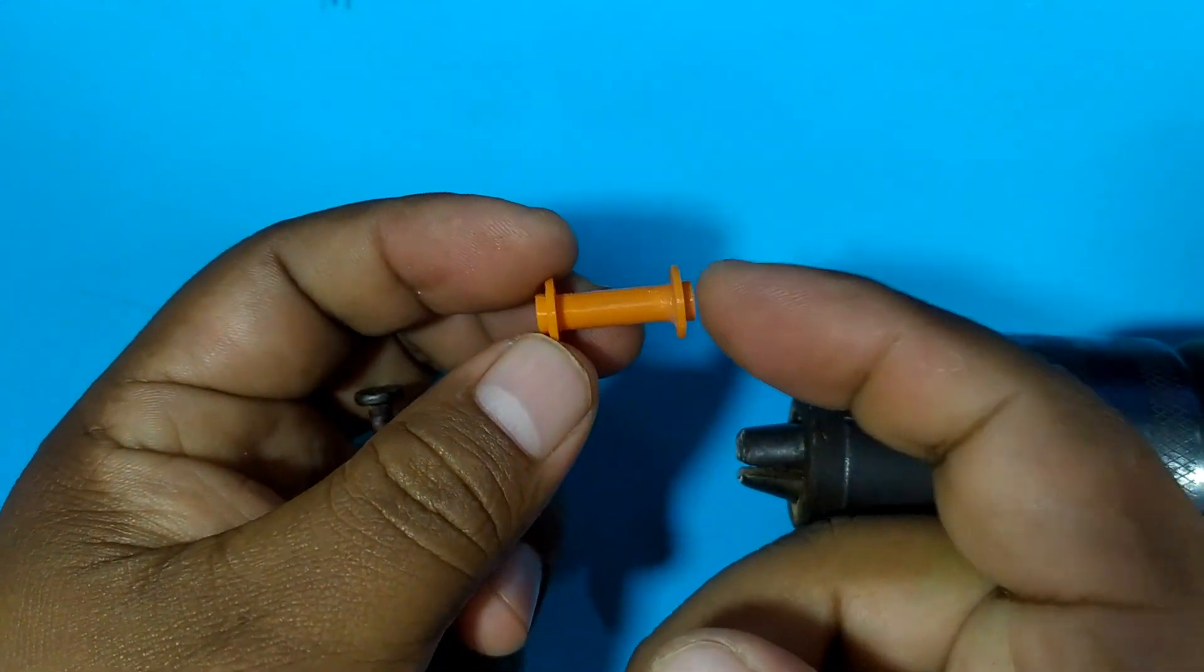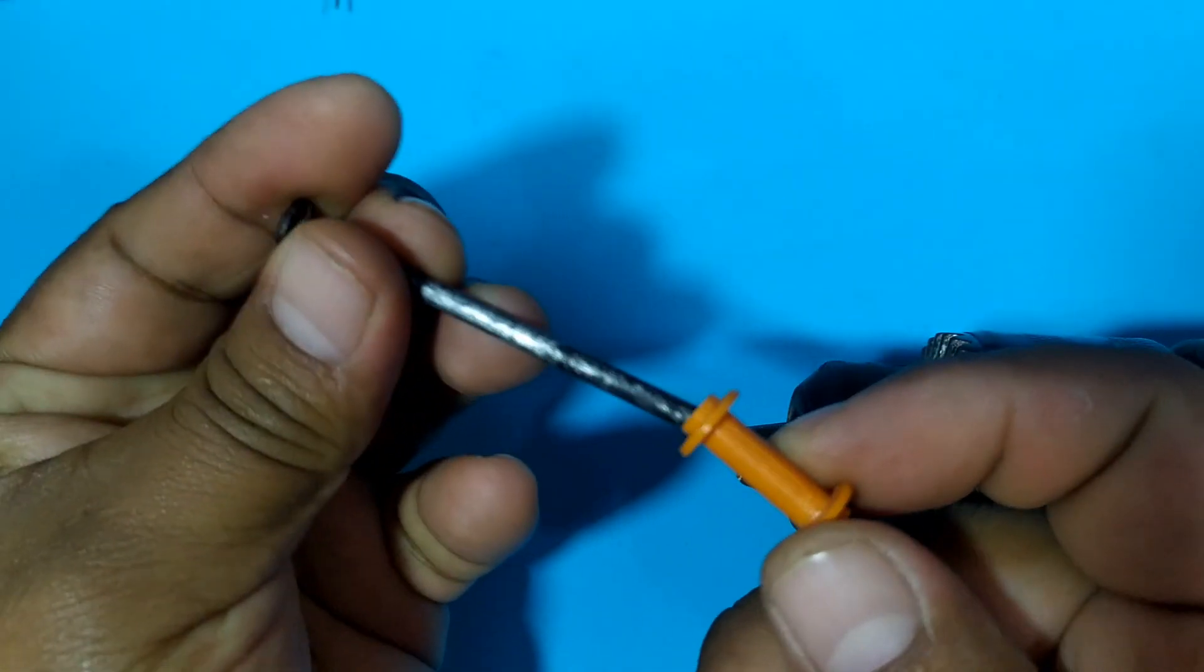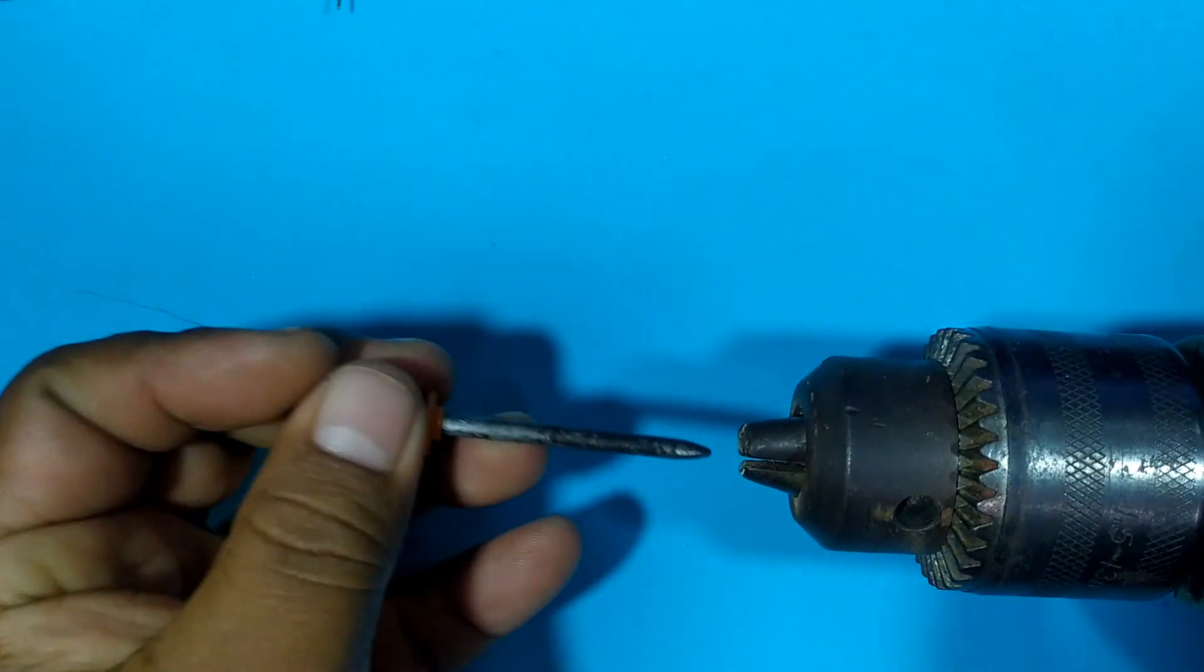Well guys, here we have our printed piece where we are going to wrap the coil. We are going to put it to the nail to be able to start the wraps, and we place it on our drill.